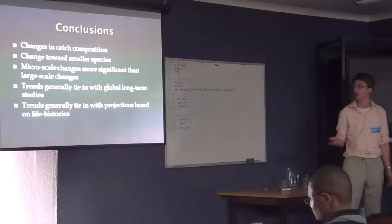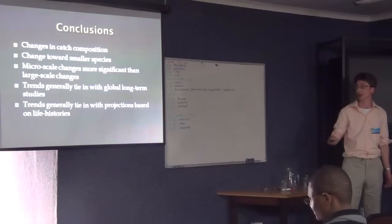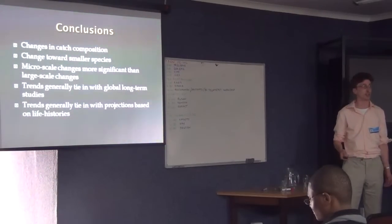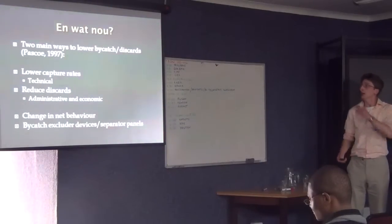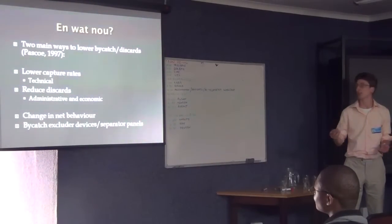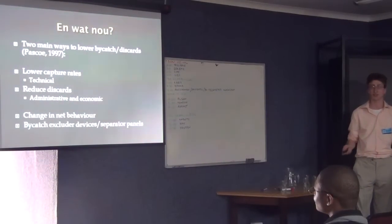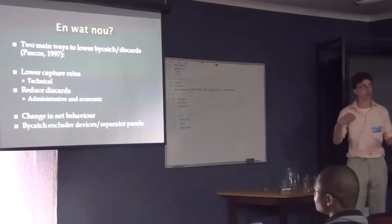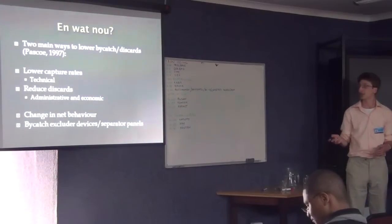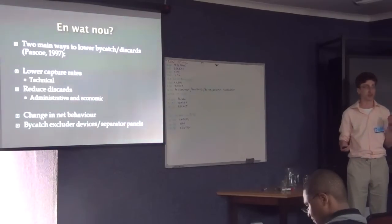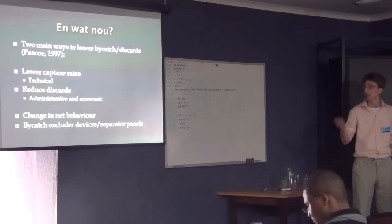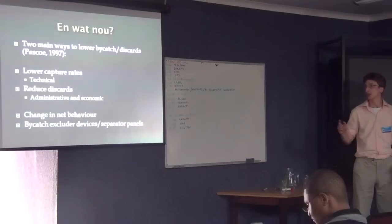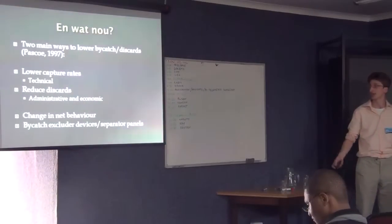Based on life history projections, we've got the trends now. I guess the question is what to do. Pascoe, who wrote the FAO manual on bycatch and discards, says there are two ways. Number one, you use technical measures to lower the capture rate before the bycatch enters the cod end of the net. Or two, you reduce the discards, which usually is based on administrative, financial, and economic measures. For the inshore trawl fishery, probably a change in net behavior, maybe lifting the net off the bottom, and including bycatch excluded devices or separator panels would be best.